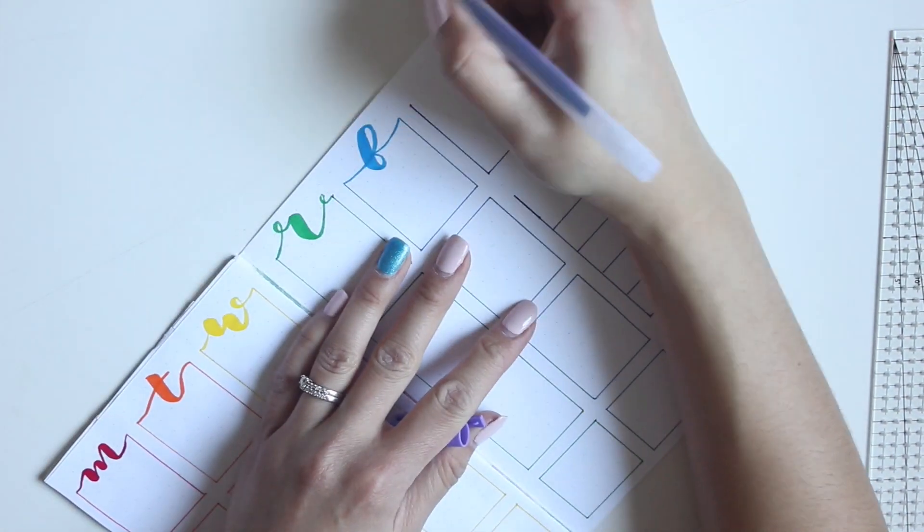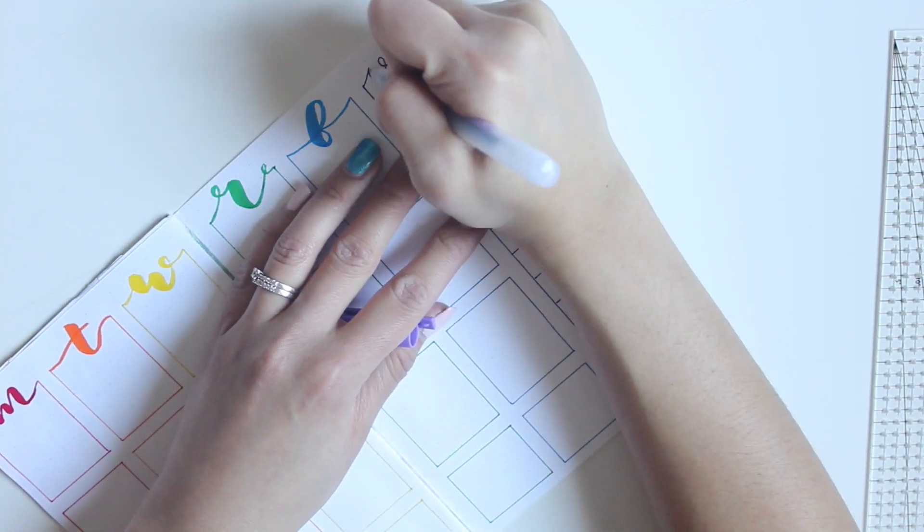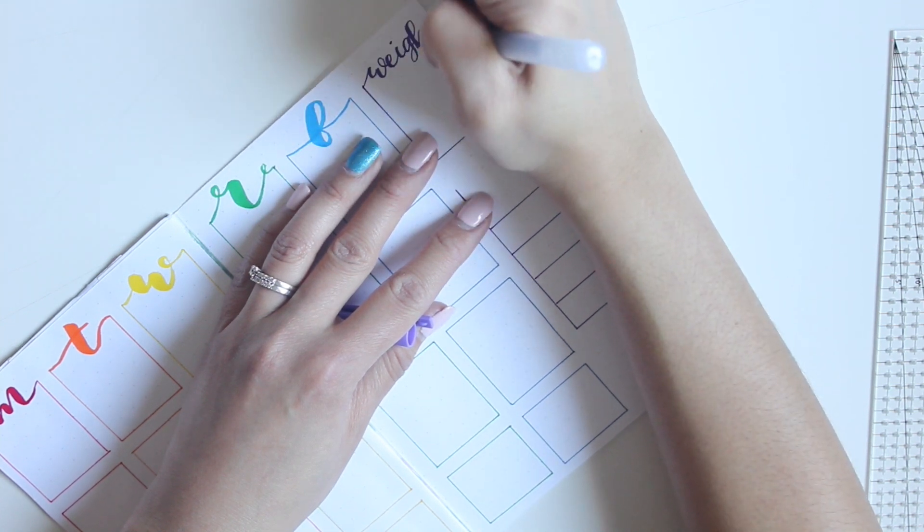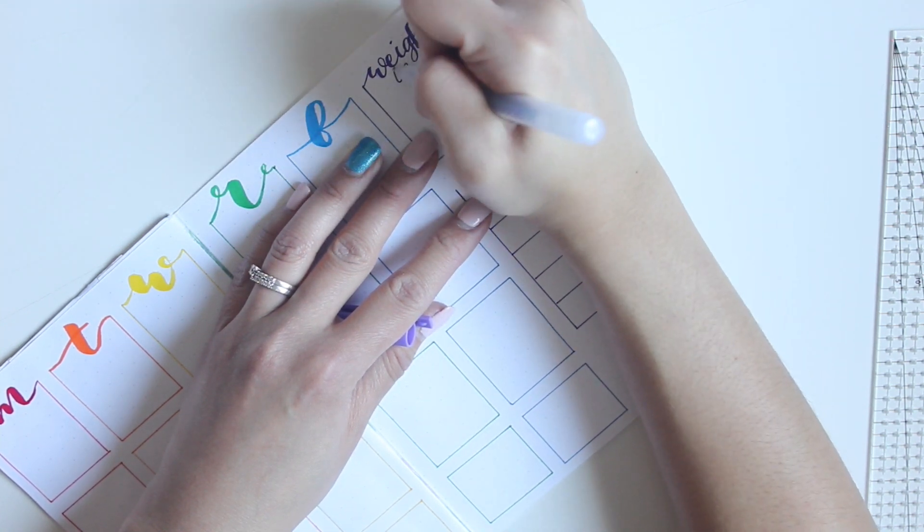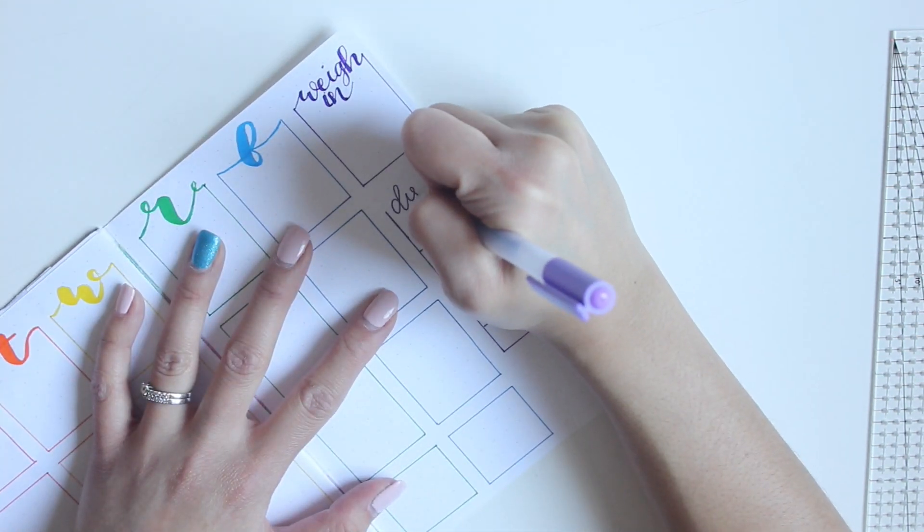And then in hand lettering, writing down 'weigh-in.' And if you've noticed, I only track my food and fitness Monday, Tuesday, Wednesday, Thursday, Friday. I do not track on Saturdays and Sundays. Those are my days to relax a little bit.